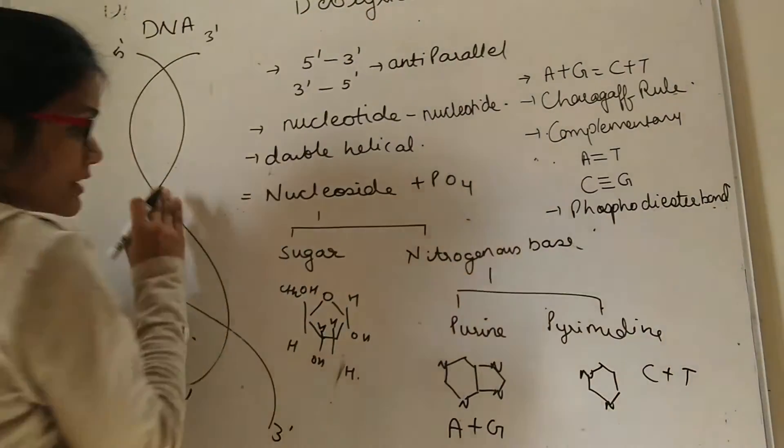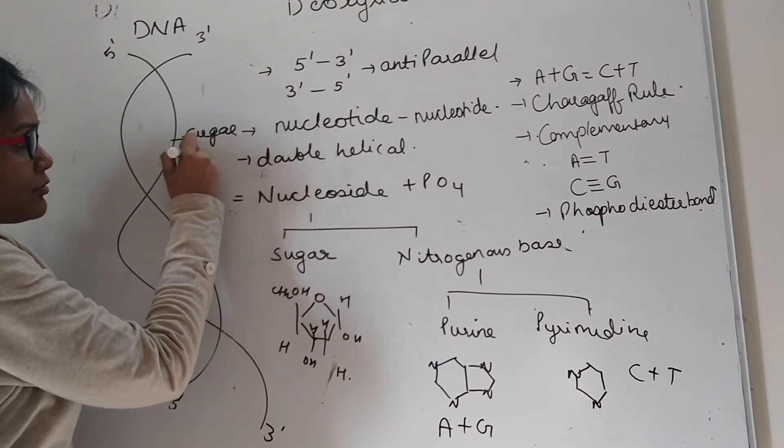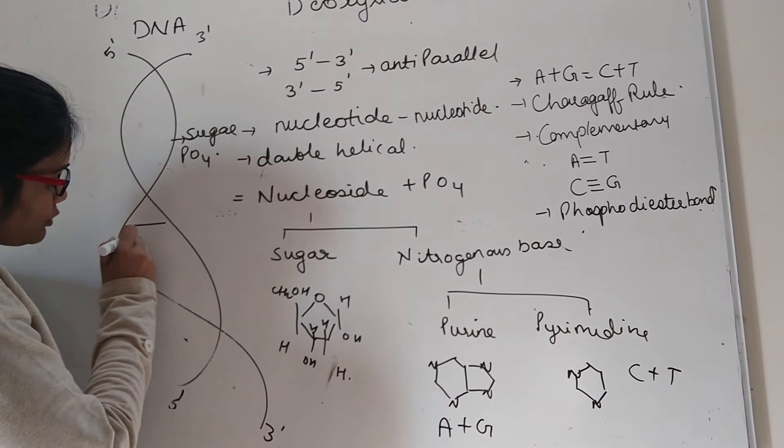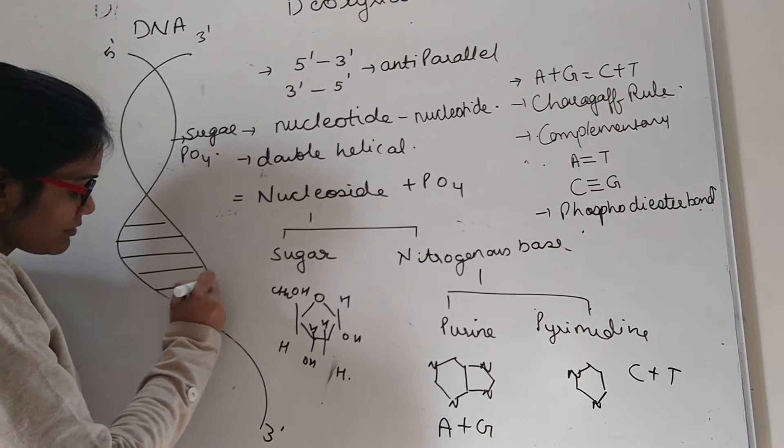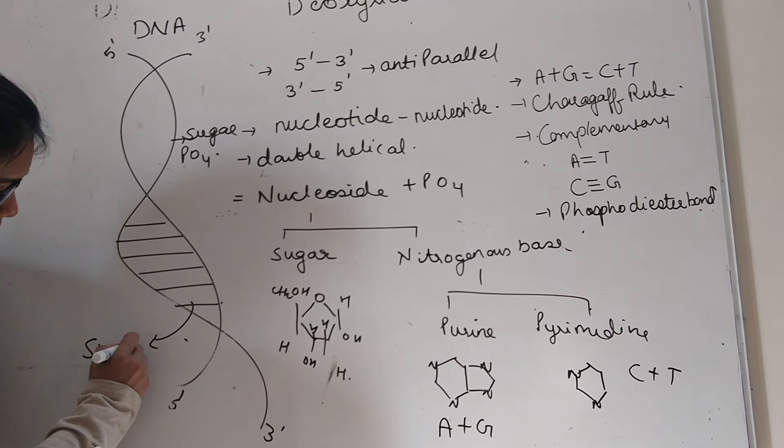Who forms the backbone of this double helical structure? The backbone is made up of sugar and phosphate. And in the center, the nitrogenous bases of two helices are present. This hydrogen bonding is responsible for its stability.